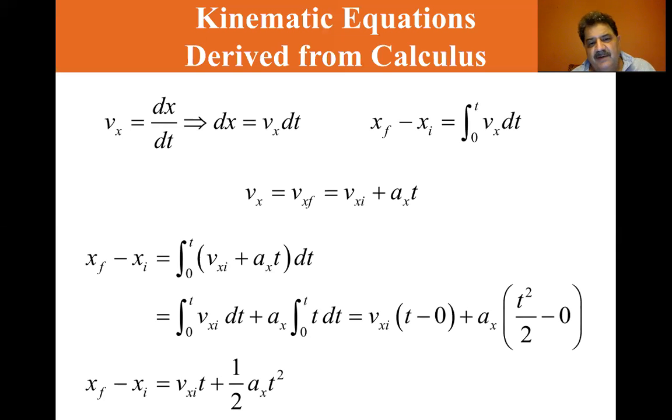When it all comes down, we end up with our same equation: x final minus x initial equals Vx_i times t plus one-half a_x times t squared.